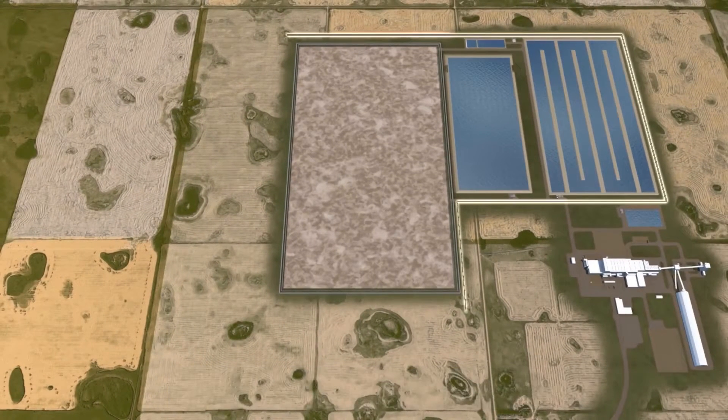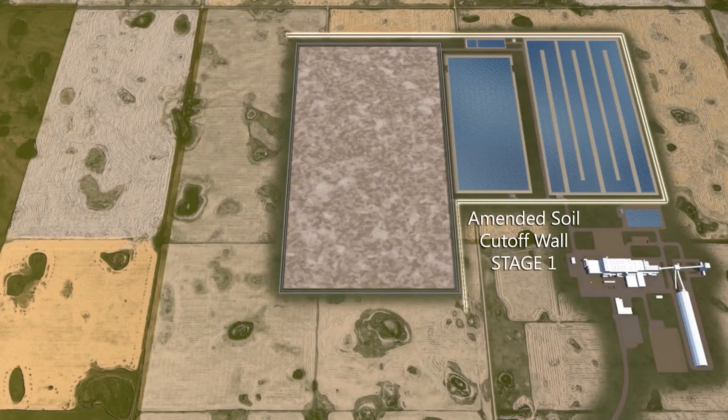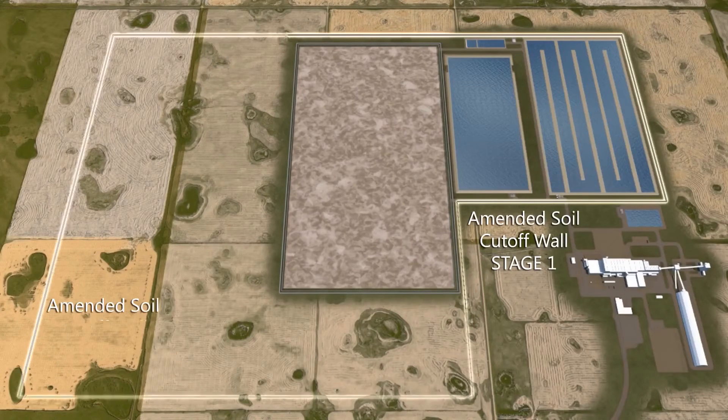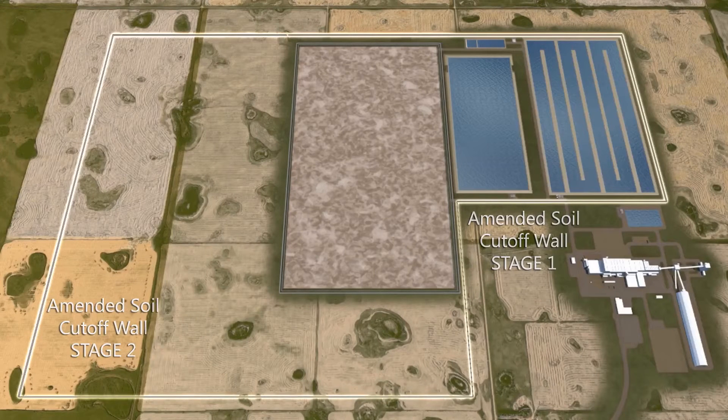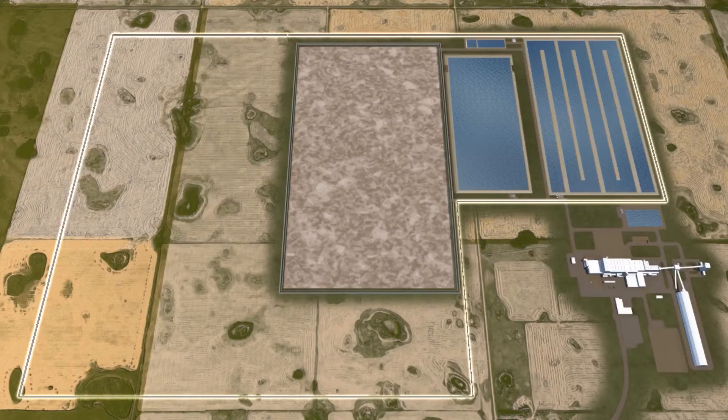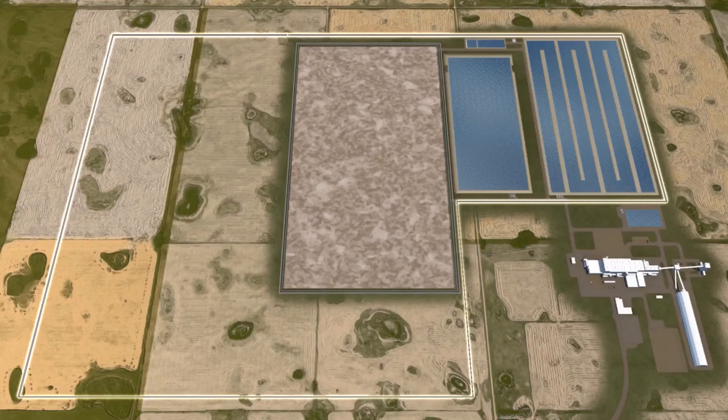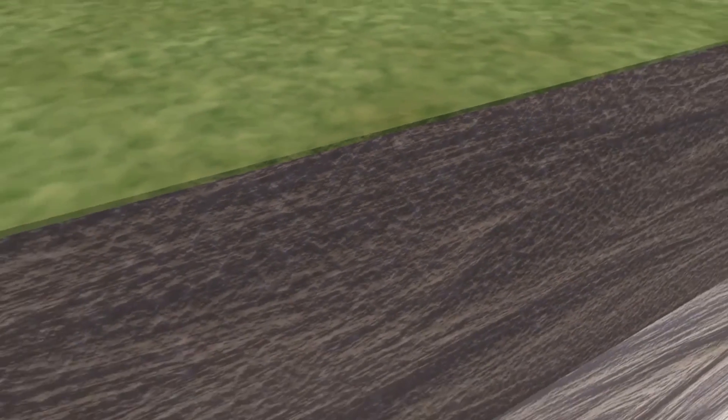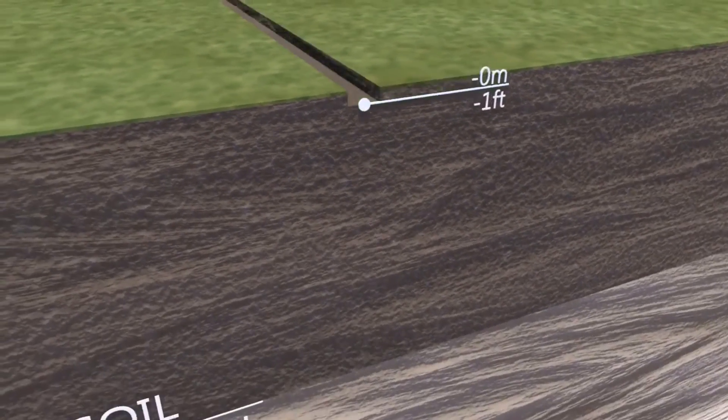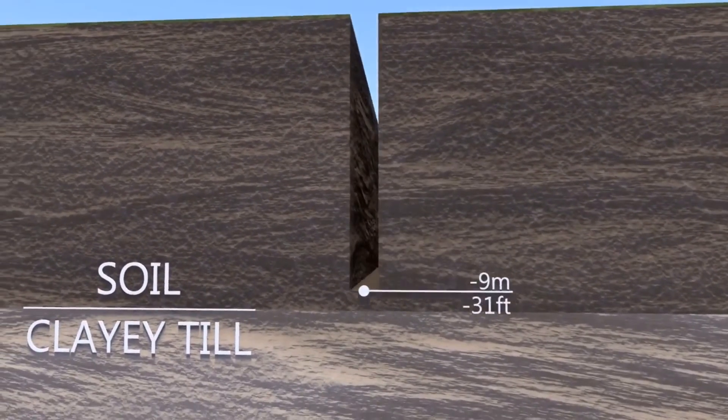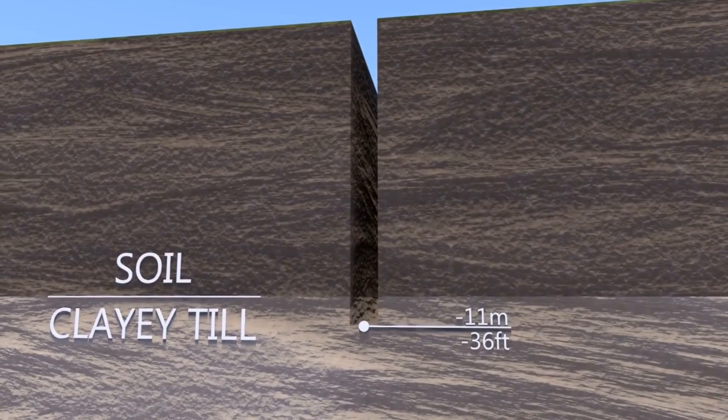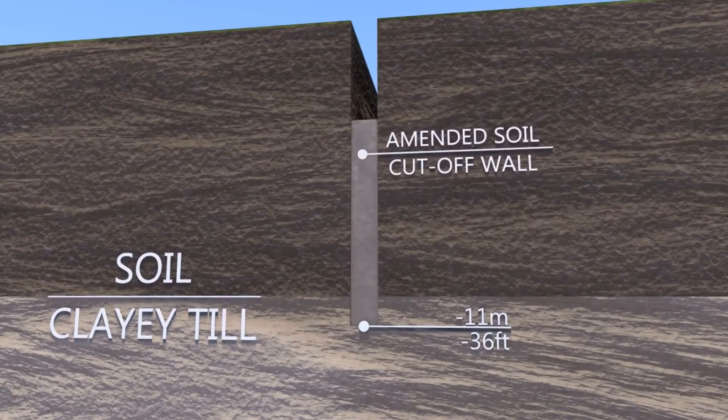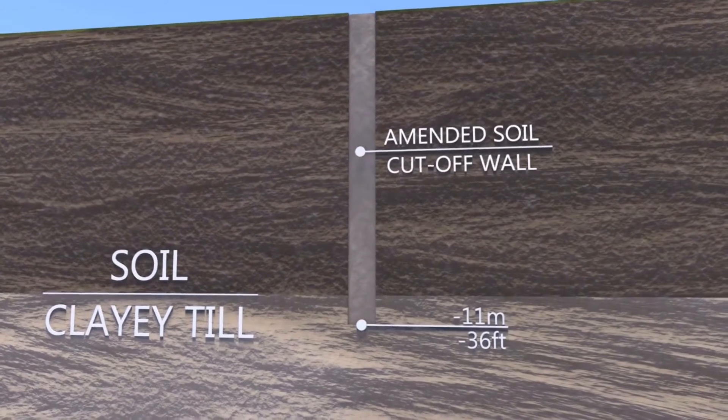During stage 1, the cutoff wall will be constructed around the north and east perimeters of the storage area. And during stage 2, around the west and south perimeters. The cutoff wall is designed to intercept the horizontal migration of brine from the storage area. The cutoff wall is constructed by excavating a 1 meter wide trench down to 1 meter below the top of the clay bearing tills of the Saskatoon group. The material excavated from the trench is mixed with sand and bentonite and is then placed back into the trench. This creates a barrier of low permeability around the storage area, stopping the flow of brine.